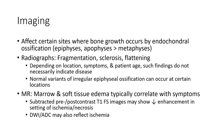Imaging is affected at certain sites where bone growth occurs by endochondral ossification. Affected sites include the epiphysis, apophysis, and the metaphysis. Radiographic findings include fragmentation and sclerosis. Interpretation depends on location, symptoms, and patient age, as such findings do not necessarily indicate disease.